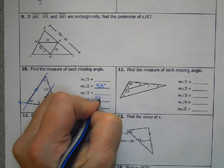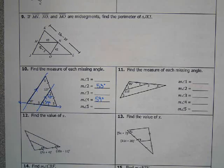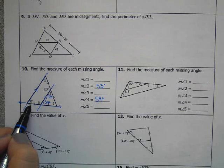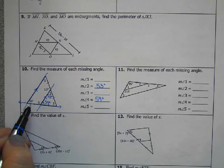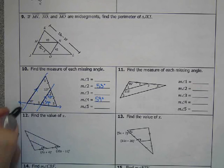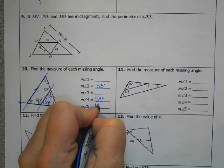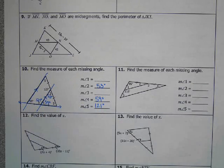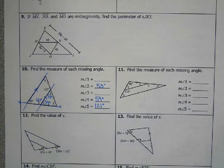This angle, angle 5 and 59, are same side interior. So you just need to do 180 minus 59. That gives you 121 degrees for angle 5. Angle 1 and 127 are also same side interior. So again, 180 minus 127 would give you 53 degrees for angle 1.